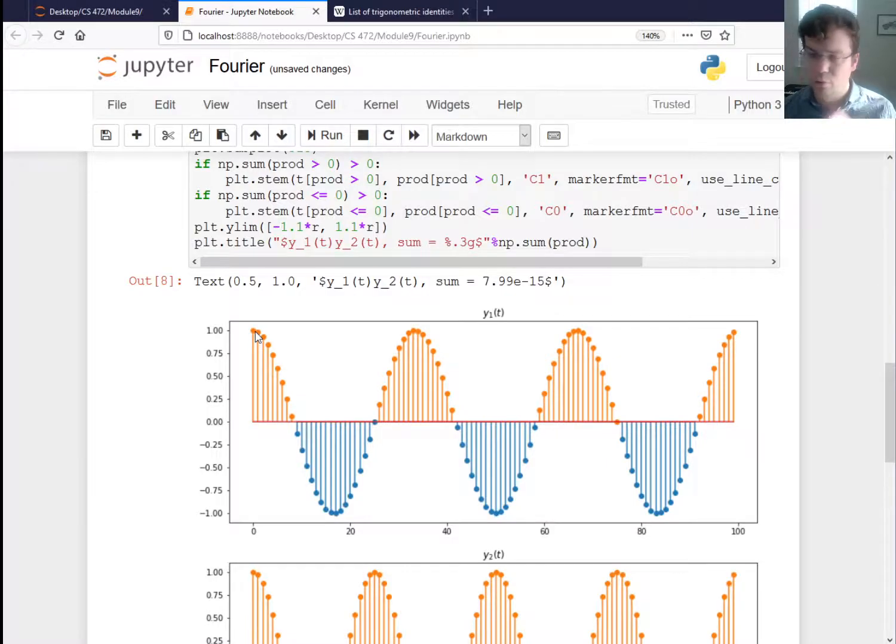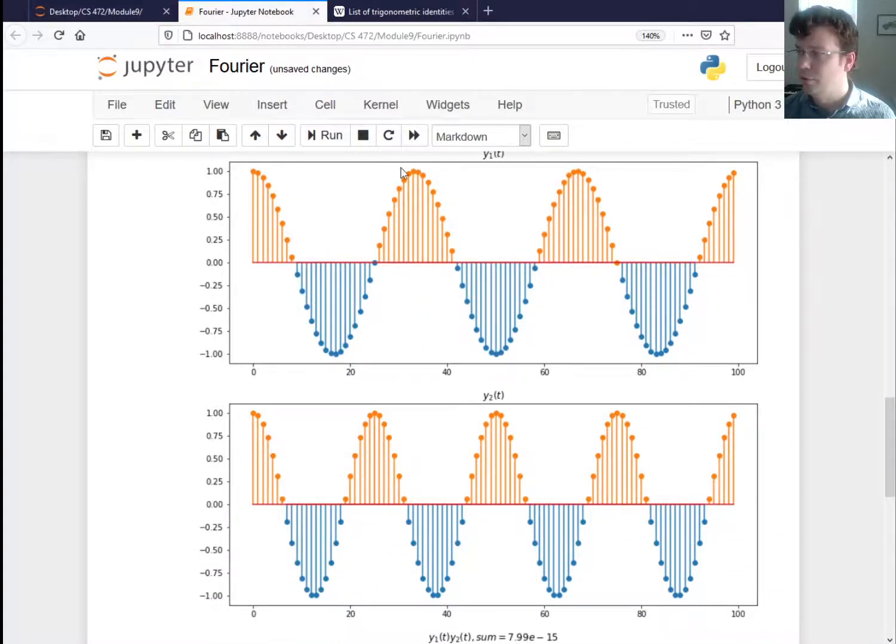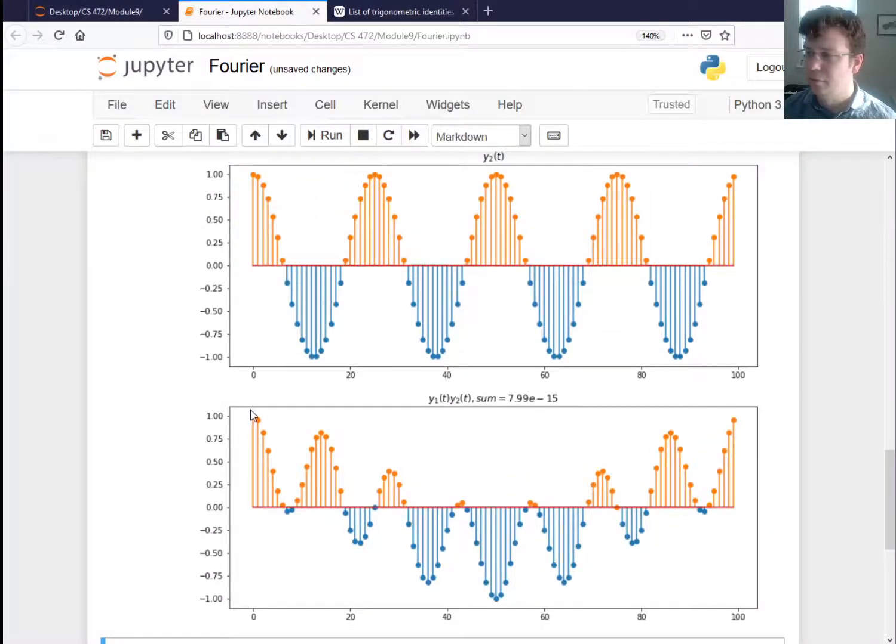So here's the first one again. So here I'm just visualizing the elements of the array, 100 elements. So there's the one that goes through three cycles of a cosine. Here's the one that goes through four cycles. And I need to do the element-wise products and sum them up. Before I sum them, let me just look at the element-wise products. So here is each one. And I can see that if I go to sum these, well, all the positives are going to get canceled out by negatives here. So this ends up being a very, very tiny number numerically, which is zero.